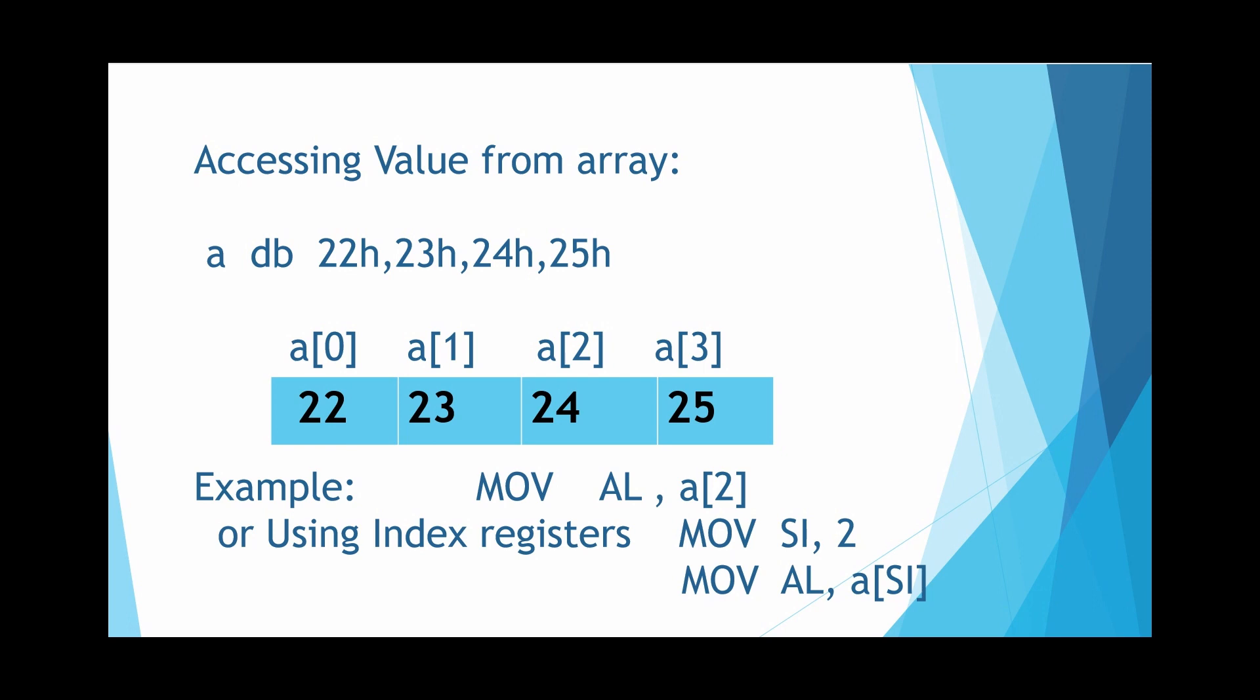We have an array A, allocated data byte of memory with values 22h, 23h, 24h, 25h. So for each value a byte of memory will be allocated, and using A[0] or A[1] you can access the particular value at that index.